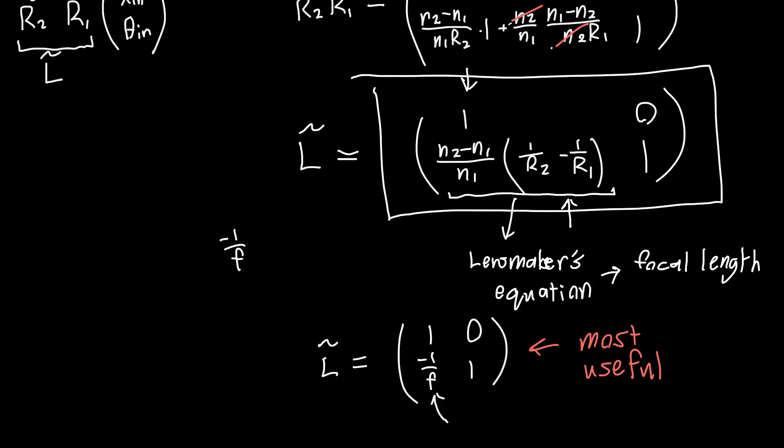We'll also derive an expression for the thick lens transfer matrix, but that's not used nearly as much. We can usually approximate lenses as thin lenses. If we want to relax our approximations, usually we use software, because there's no point in making our hand analysis more complex if we're going to have to deal with other things like non-paraxial optics, for example. Often if we want to relax any of our approximations, we'll just want to go straight into using software.